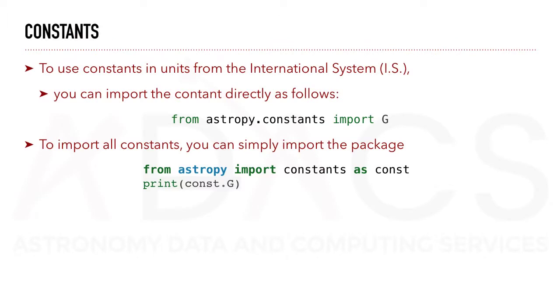To import all constants, you can simply import the package. For example, from AstroPy, import constants as const. Then you can print const dot G, which will give you the gravitational constant.